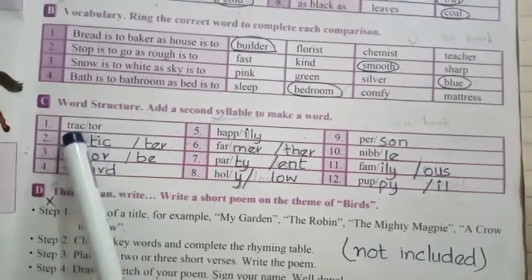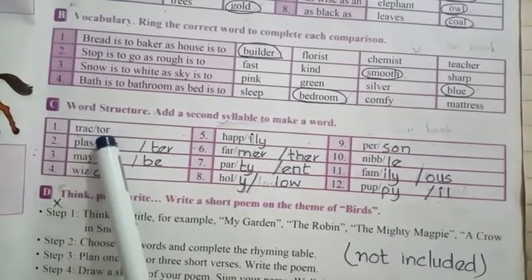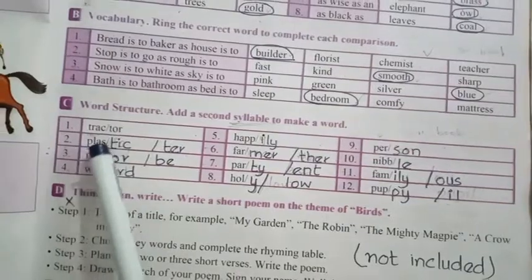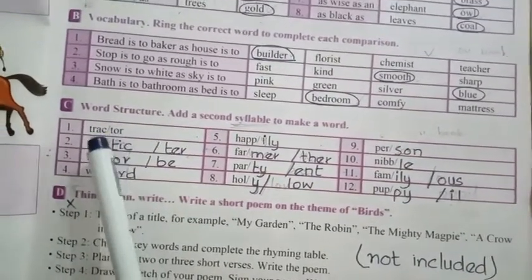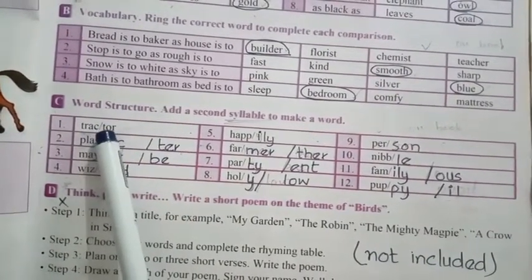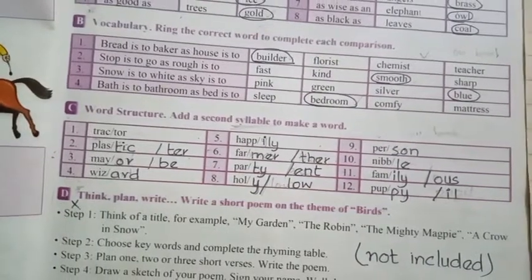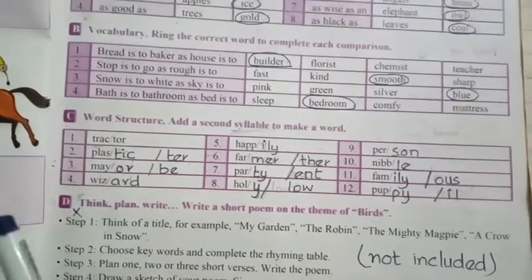So you see this is the first syllable, trac. This is the second syllable, tor. When you say tractor, there is a break in between and that is the syllables. Now some words have one syllable, some have two or more syllables.